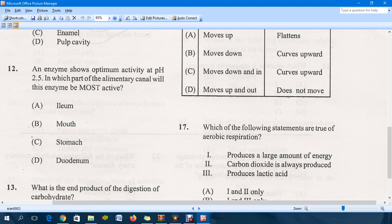Moving down to question 12. An enzyme shows optimum activity at pH 2.5. In which part of the alimentary canal will this enzyme be most active? This particular enzyme works best at approximately 2.5 pH, and that of course is an acidic environment. The answer for that definitely is the stomach, and that enzyme they're talking about is known as pepsin.